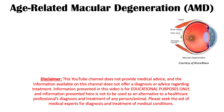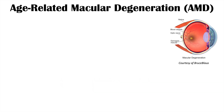Hi everyone. This lesson is on age-related macular degeneration or AMD. In this lesson we're going to talk about some of the risk factors for getting this condition, the pathophysiology behind why it occurs, the signs and symptoms, how it's diagnosed, and how it's treated.